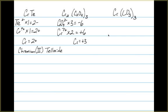That means if we have a total of 6 and we have two chromiums, each one must have a plus 3 oxidation state. So our name then is chromium 3 oxalate.